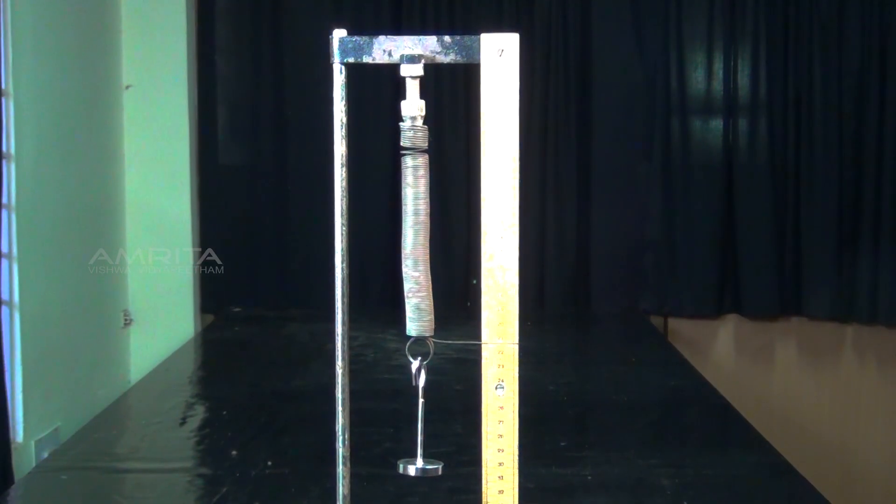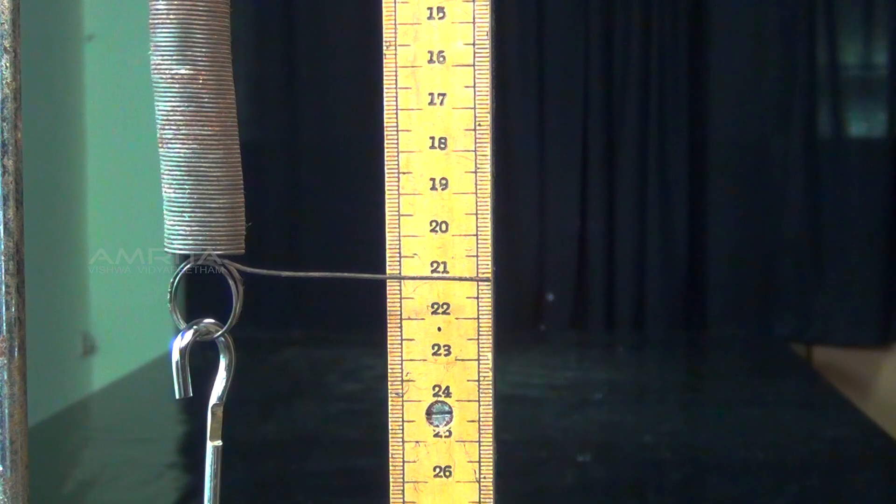With the weight hanger alone attached to the spring, the reading of the pointer on the scale is noted.